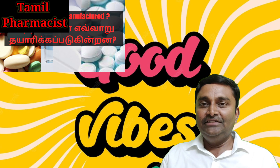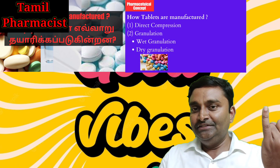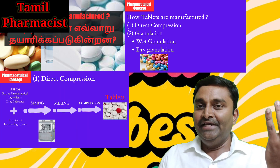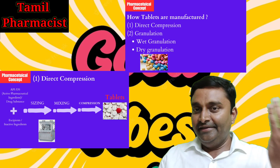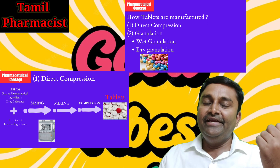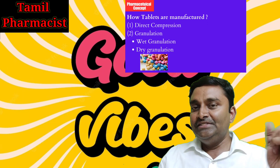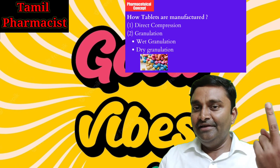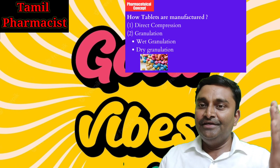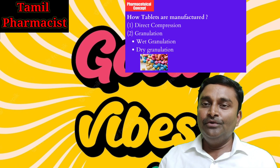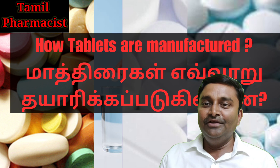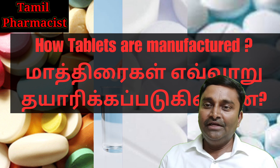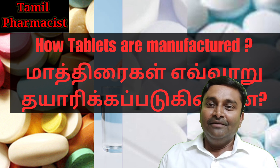Overall, tablets are manufactured by three methods in a nutshell. In direct compression, the API and excipients are mixed and compressed directly into tablets. In granulation, there are two types — dry granulation and wet granulation. In dry granulation, no solvents are used. In wet granulation, solvents and a granulating agent are used to mix, granulate, and dry, then lubricate and compress. These are the overall processes of tablet manufacturing. A separate video with more in-depth detail will follow. Please share and subscribe to the Tamil Pharmacist channel — your support is very important.